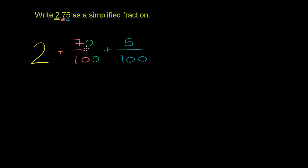Now we can add these two. What is 70 plus 5? 70 plus 5 is 75, and our denominator is 100. So this can be rewritten as 2 and 75 hundredths. We saw that in the last video—you would read this as 2 and 75 hundredths.